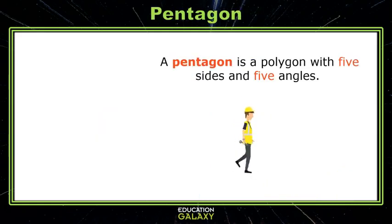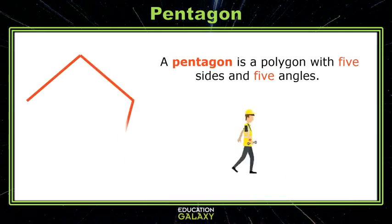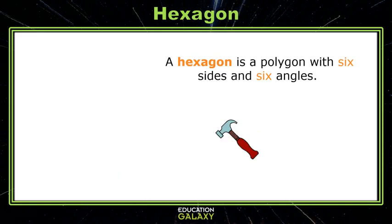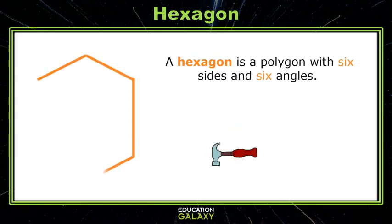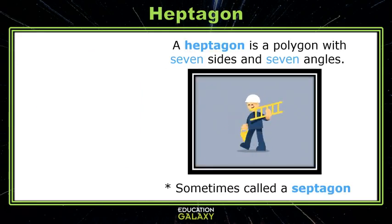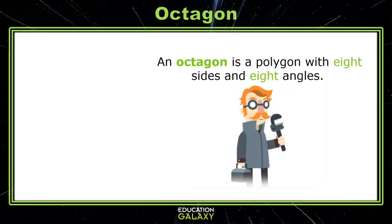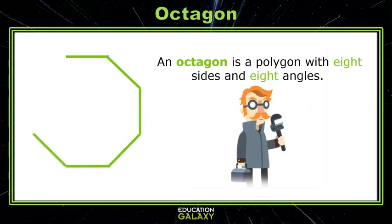A pentagon is a polygon with five sides and five angles. A hexagon is a polygon with six sides and six angles. And a heptagon is a polygon with seven sides and seven angles — sometimes they're also called septagons. An octagon is a polygon with eight sides and eight angles.